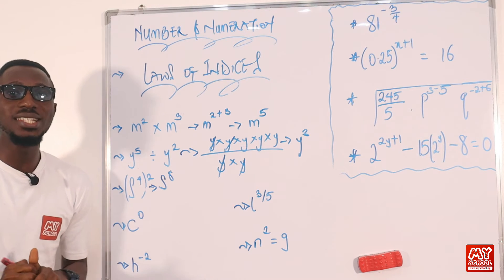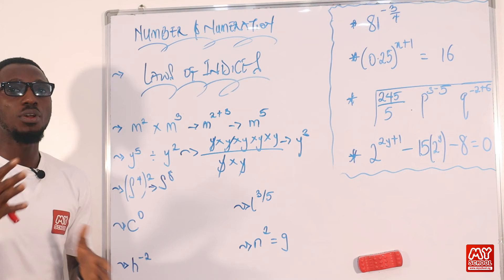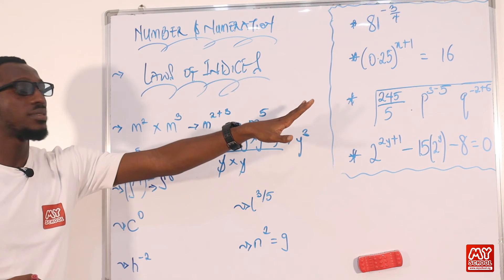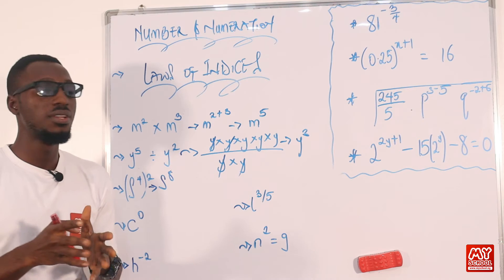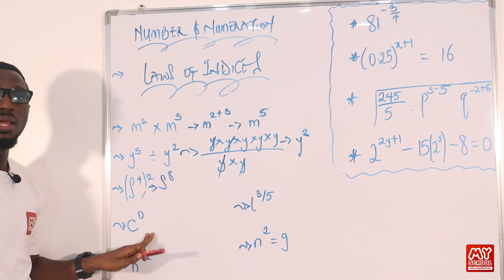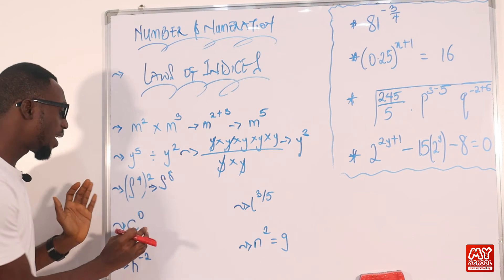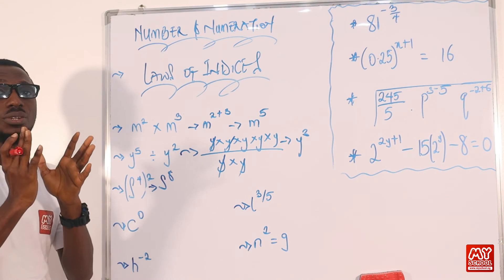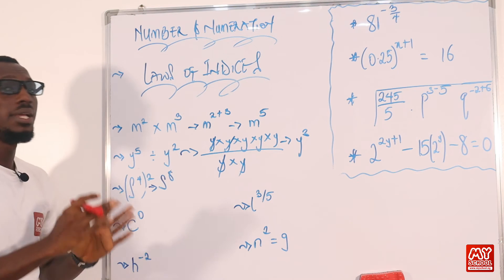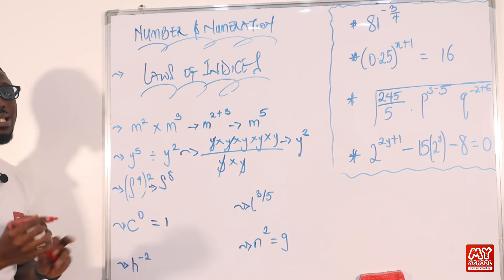I'm trying to keep this short so that I won't complicate the simple steps. As we go into the fuller version of this topic, I'm going to show you some of the other methods we can implement when tackling questions like this. Now let's go to the next law — the zero index. Provided that the base is not 0, any letter or number raised to power 0 is 1. So if I have 1000 raised to power 0, it is 1. If I have 0.1 raised to power 0, that is still 1. Even 30 million raised to power 0 is still 1. So C raised to power 0 equals 1, under the condition that C is not equal to 0.